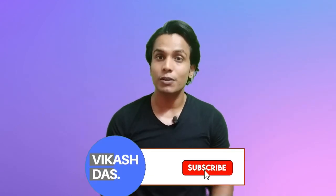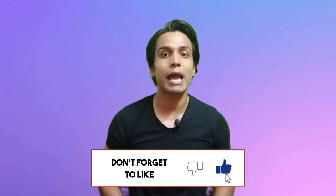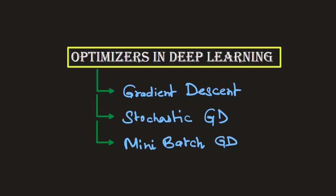Welcome back to this deep learning playlist. Please consider subscribing to the channel if you are new here, and consider watching all the tutorials in sequence to have a better grip on the subject. With this lecture we are starting the discussion around optimizers in deep learning, and we are going to cover all the optimizers within two different videos. This one is part one, where we are going to discuss some basic optimizers like gradient descent and its flavors: stochastic gradient descent and mini-batch gradient descent.